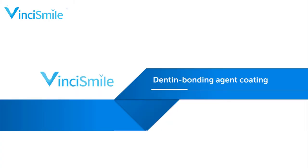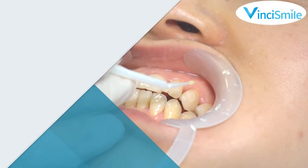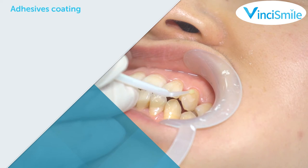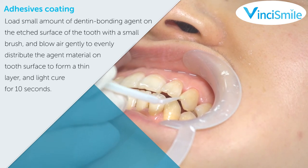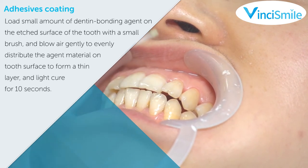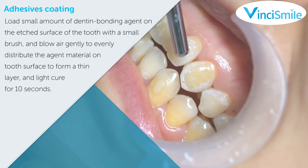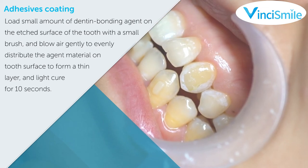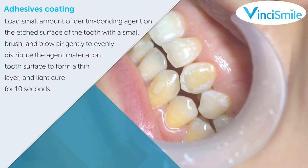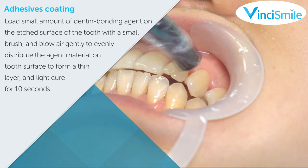Dentin bonding agent coating: apply a small amount of dentin bonding agent on the etched surface of the tooth with a small brush, and blow air gently to evenly distribute the bonding material onto the surface to form a thin layer, then light cure for 10 seconds.